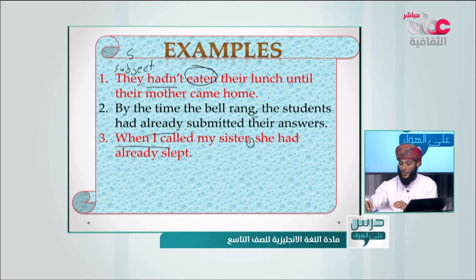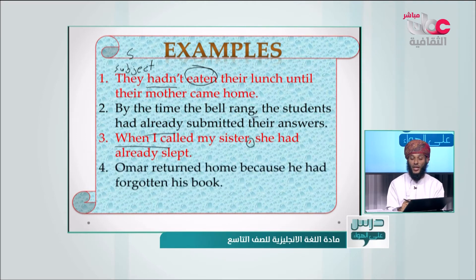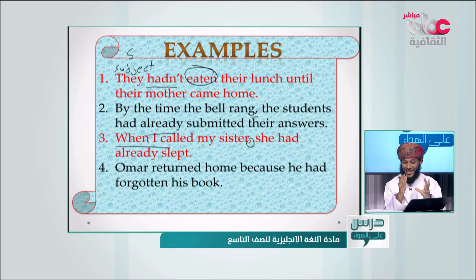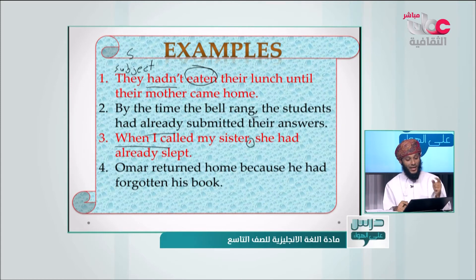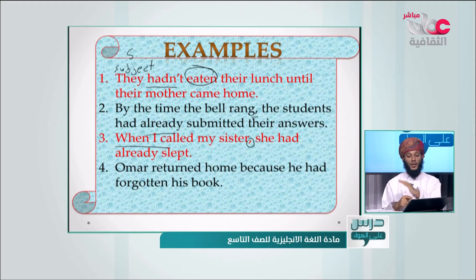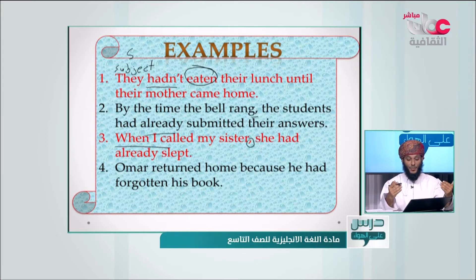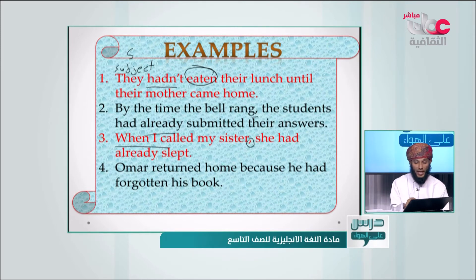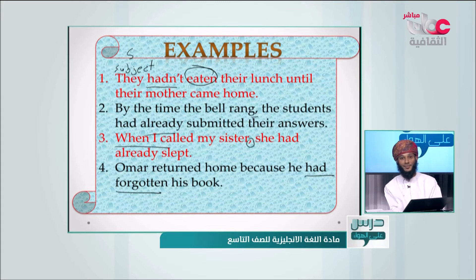Example four: 'Umar returned home because he had forgotten his book.' We can also say: 'Because he had forgotten his book, Umar returned home' — with a comma after the first clause. 'Had forgotten' is the past perfect here. Umar returned home at a specific time in the past because he had forgotten his book before that.